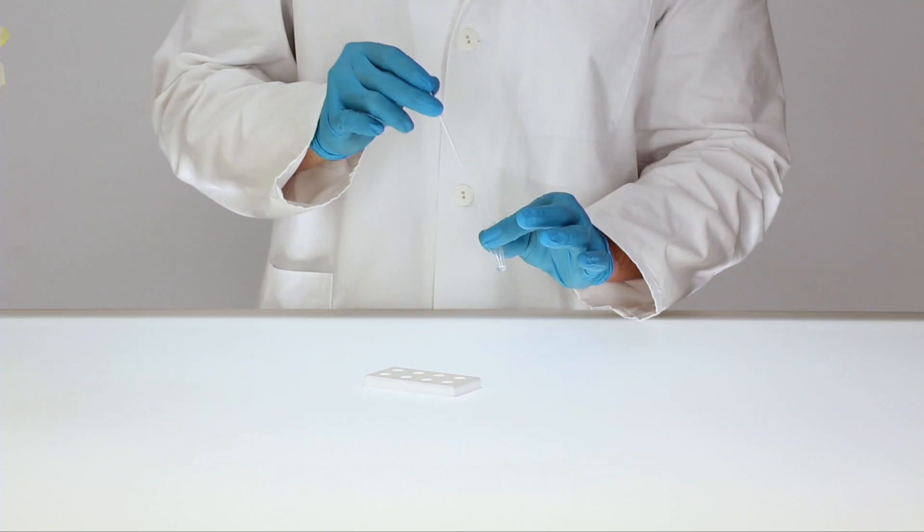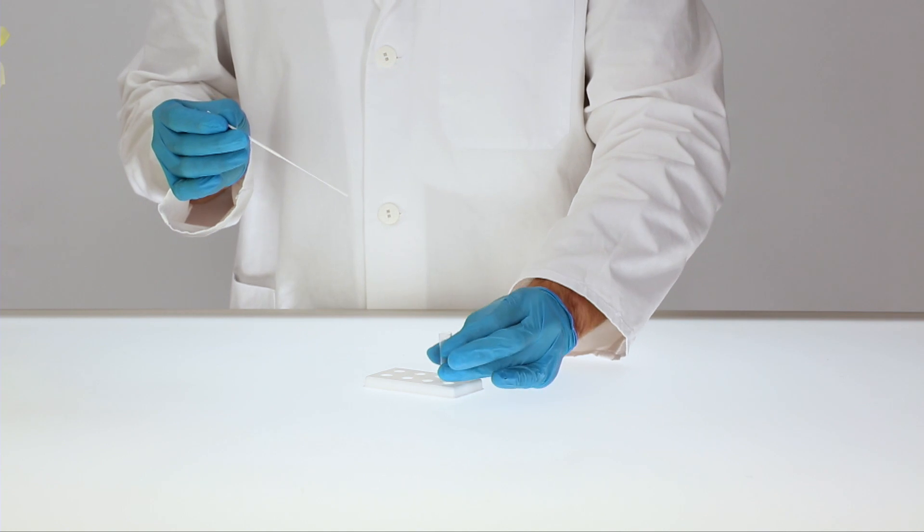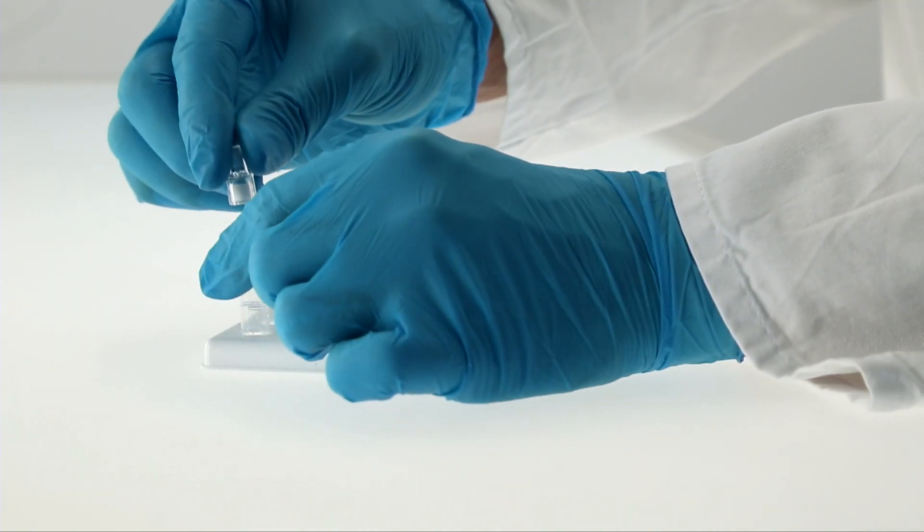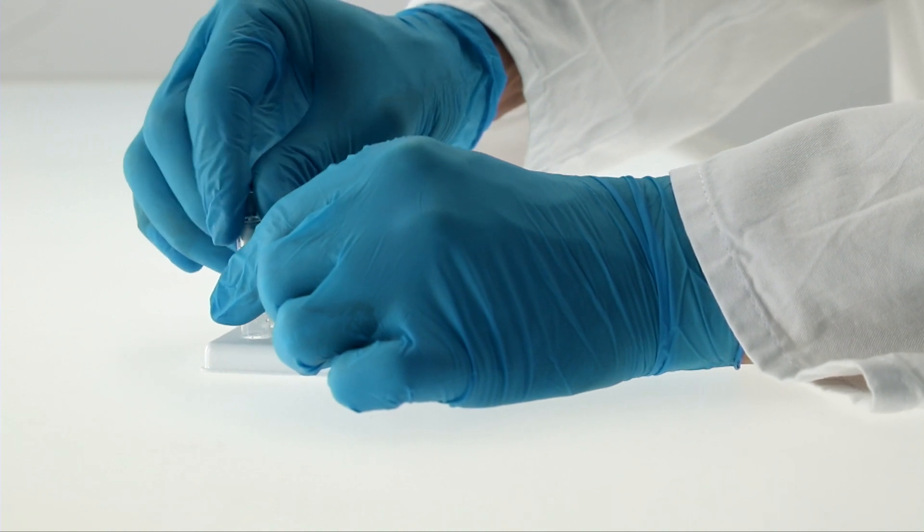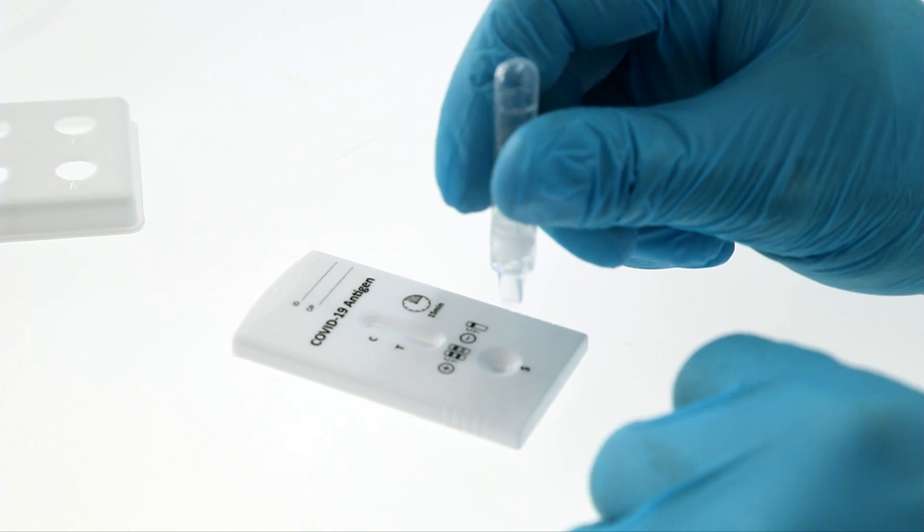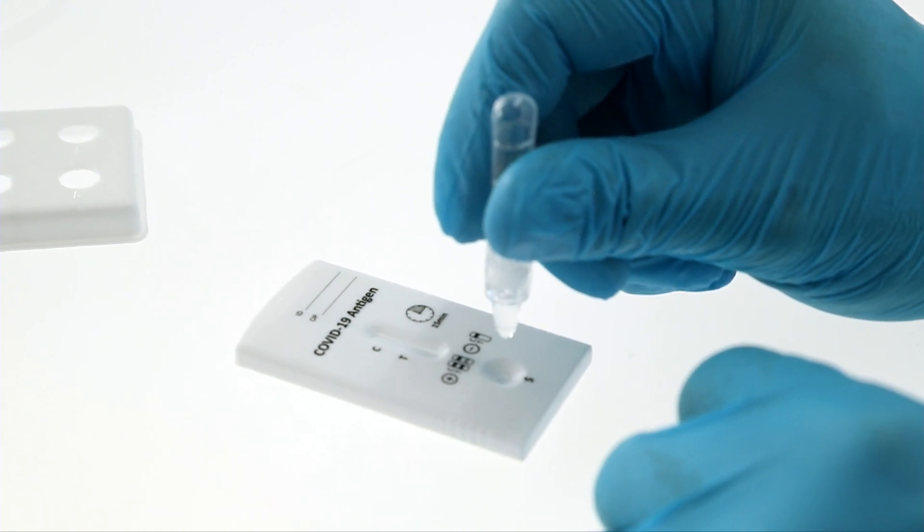When removing the swab, squeeze out as much liquid as possible. Attach a dropper cap to the extraction tube, invert the tube and transfer two drops of the extracted solution to the specimen well of the test cassette.